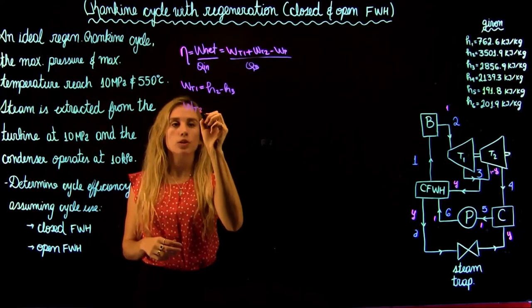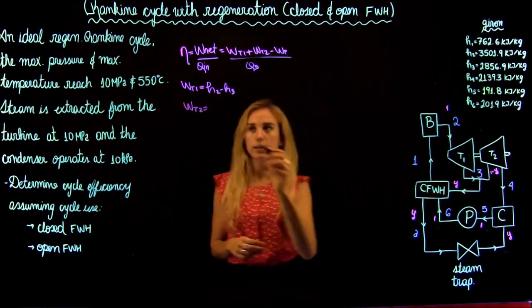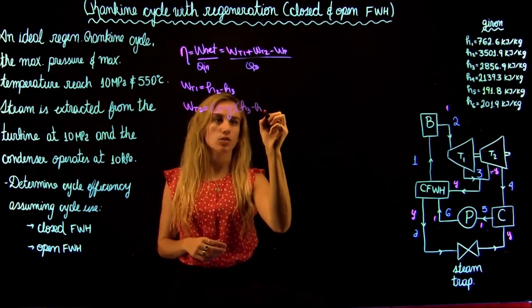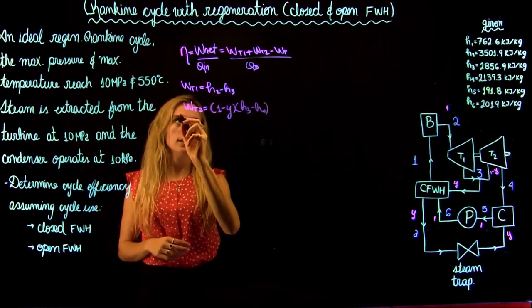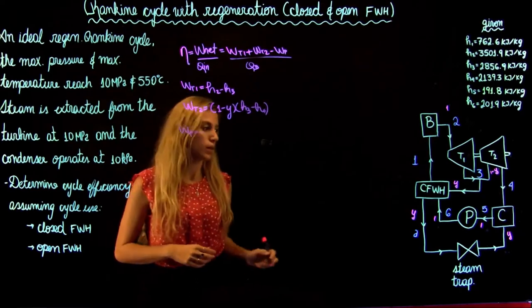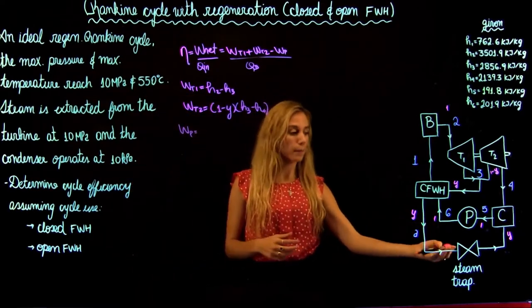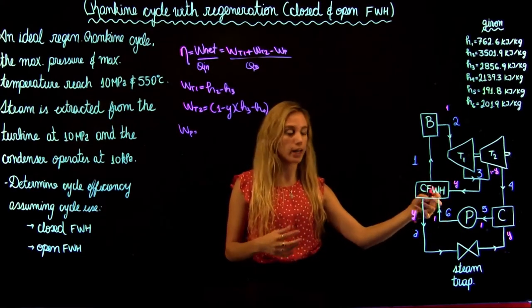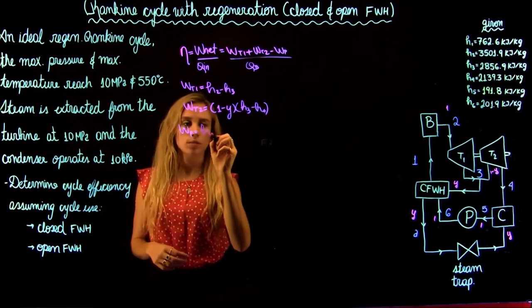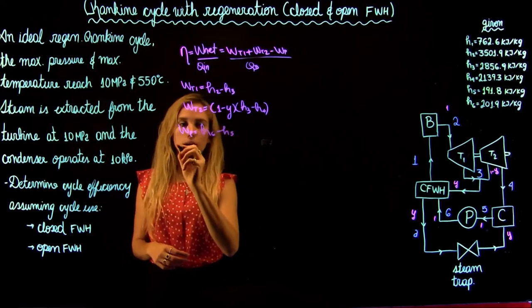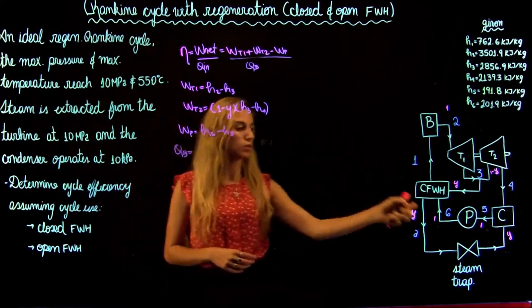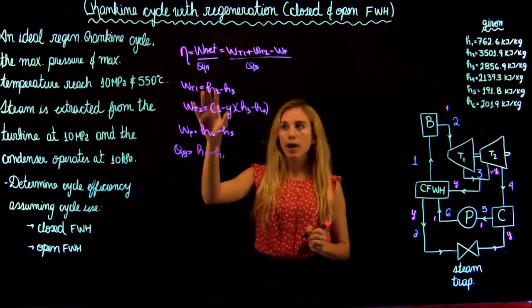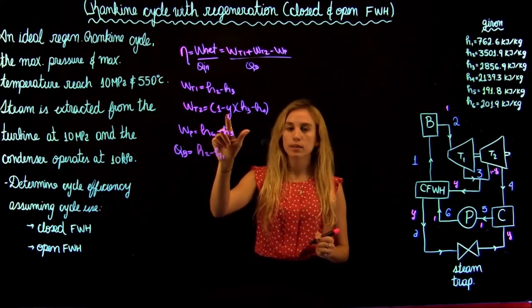At the low pressure turbine, we know that we have a fraction of the flow going in, so it's going to be one minus Y times H3 minus H4. Then the work of the pump — we are inputting energy to compress the fluid, so state six has higher energy than state five, giving H6 minus H5. The heat at the boiler, by the same concept, is H2 minus H1. We have all the enthalpies for these states, but we need to find the mass fraction Y.